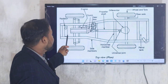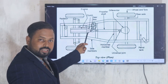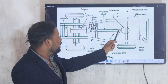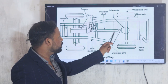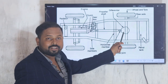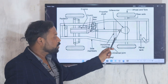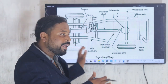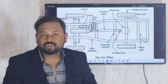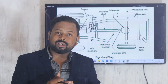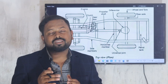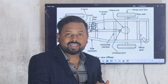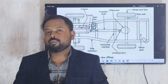The chassis basically contains these major components: first is the radiator, then the engine, then the clutch, then the gearbox, then the propeller shaft with two universal joints, then the differential, and finally the rear wheels. These are the main components contained within the chassis. Next we will discuss the power transmission system of the automobile.